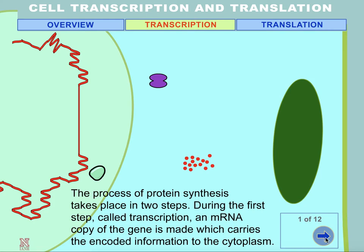The process of protein synthesis takes place in two steps. During the first step, called transcription, an mRNA copy of the gene is made, which carries the encoded information to the cytoplasm.